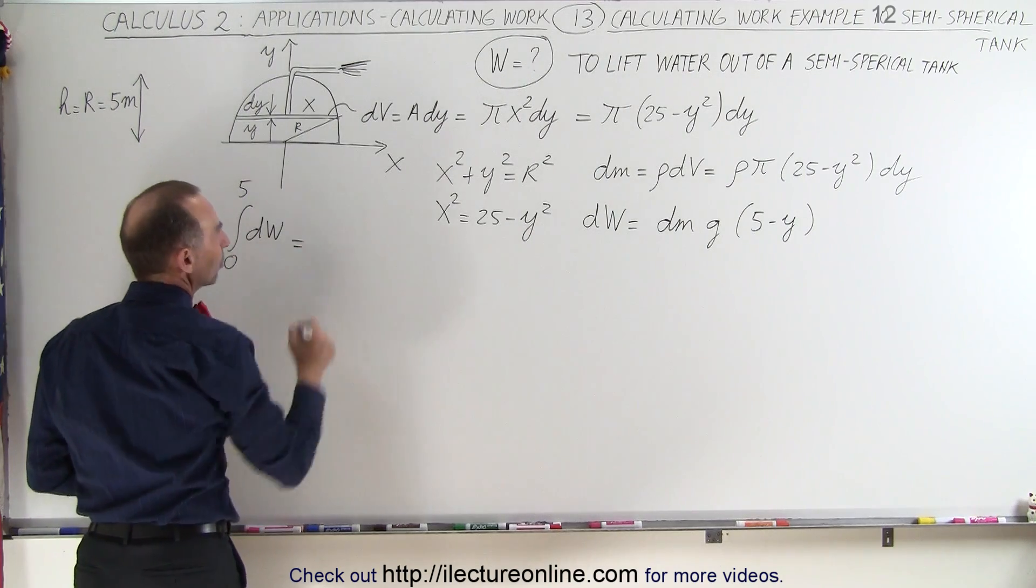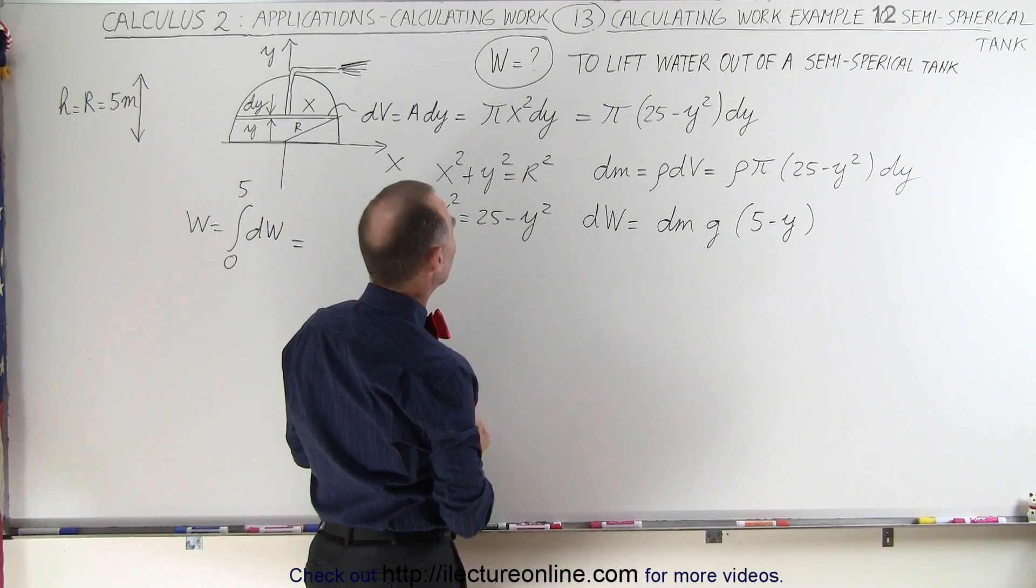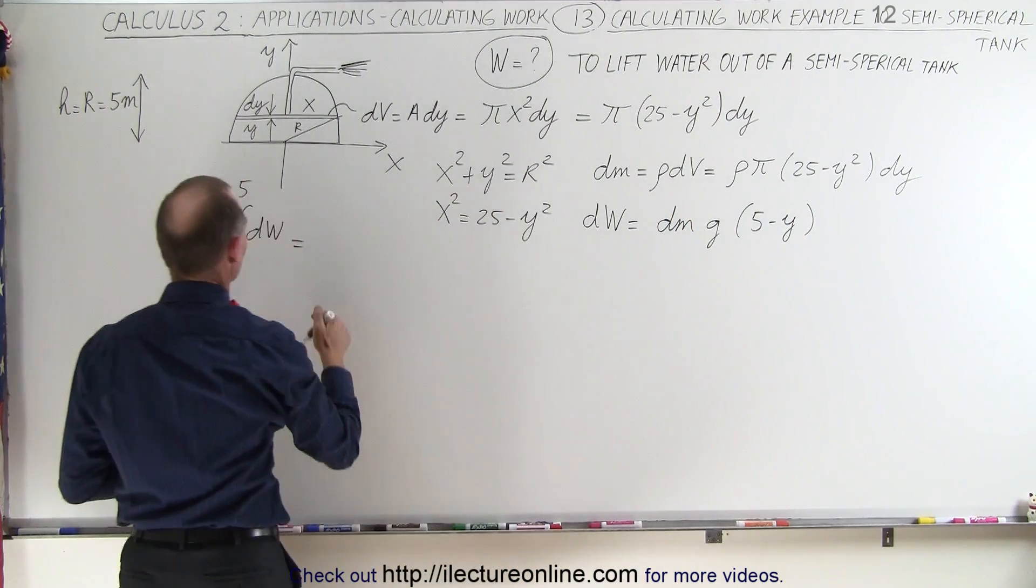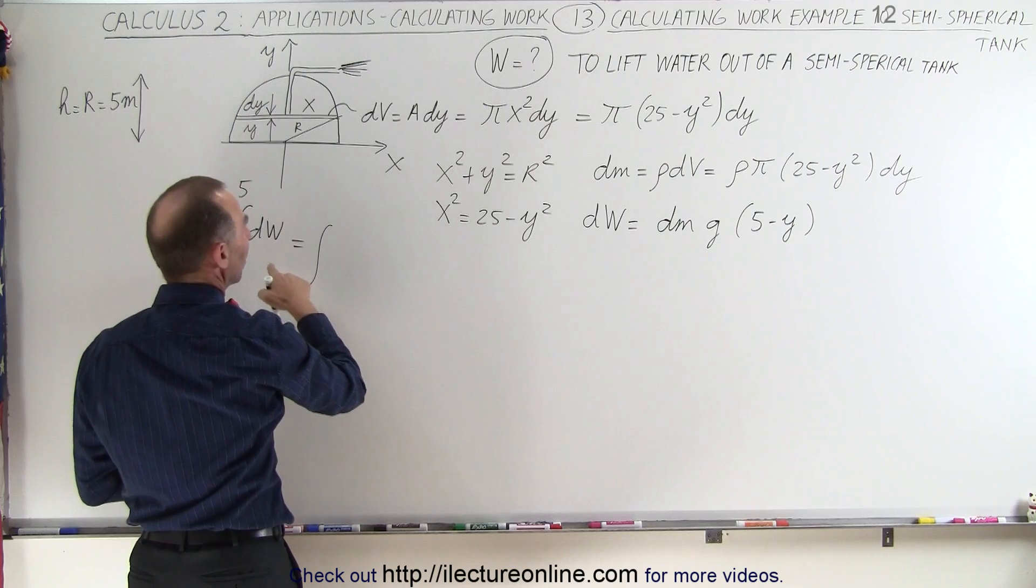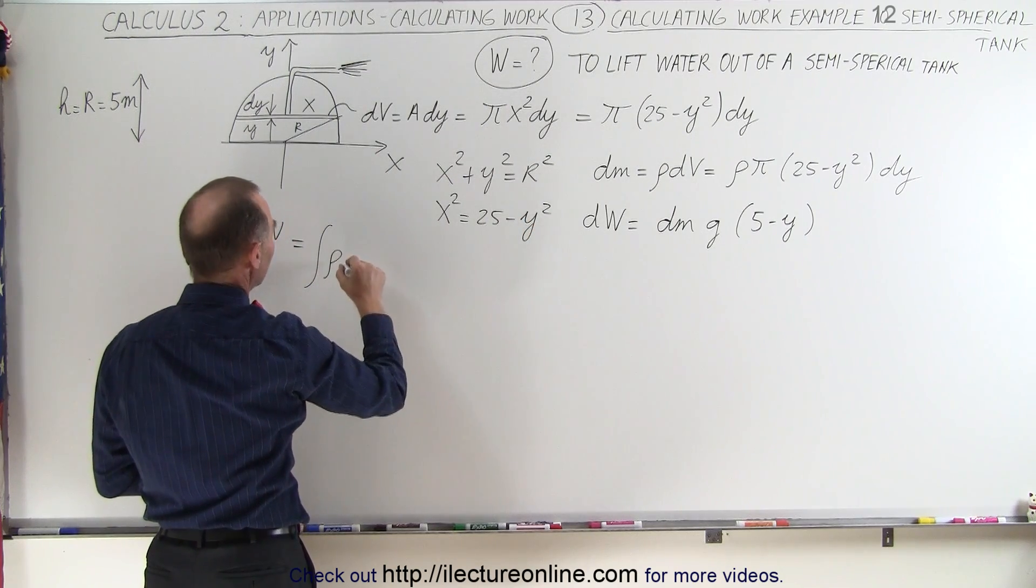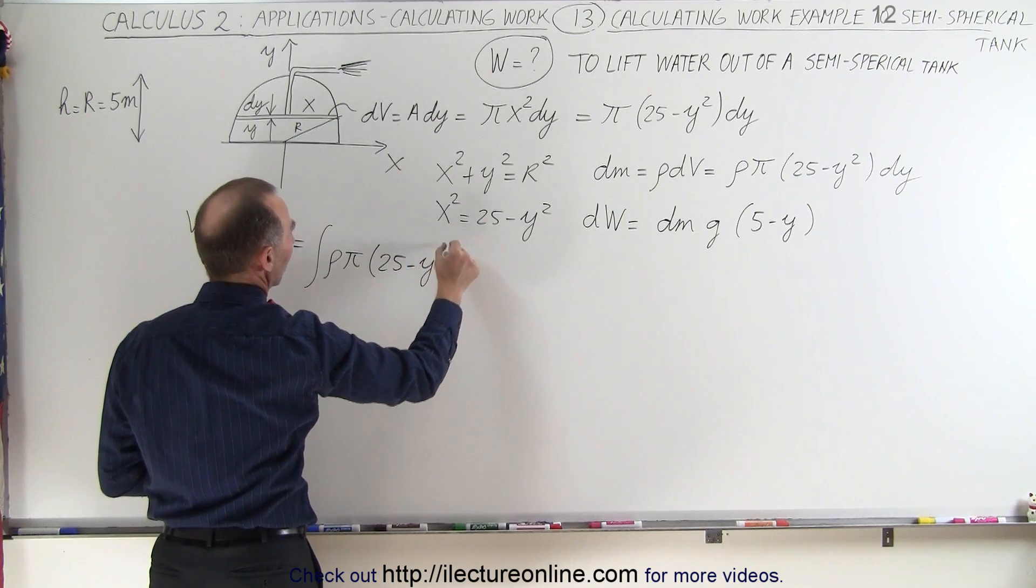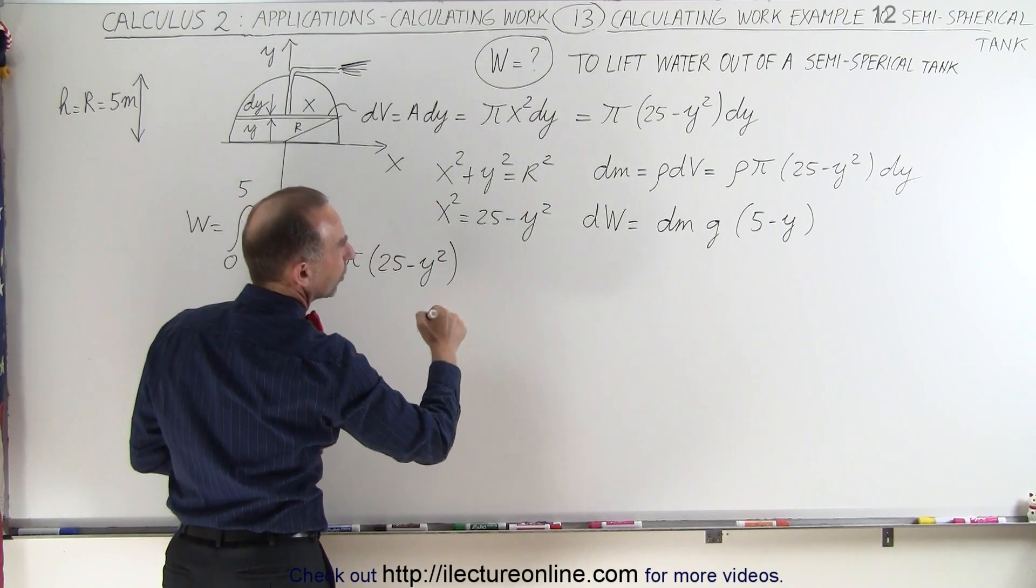So this is going to be equal to, let's take all the constants out. Well anyway, dm is equal to that, let me just write it out first. It's going to be the integral of dm, which is the density times π times (25 - y²) times dy.